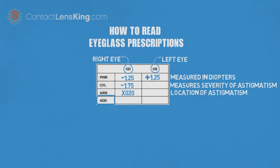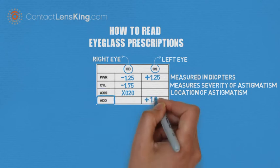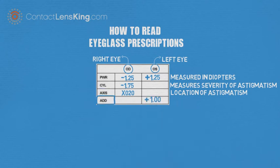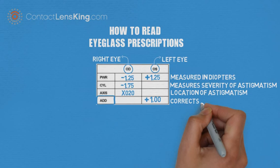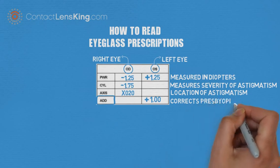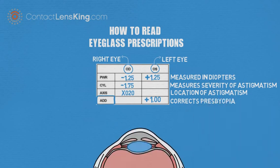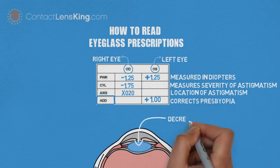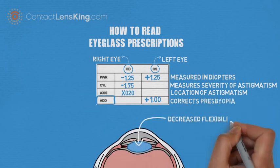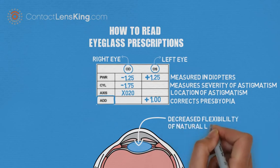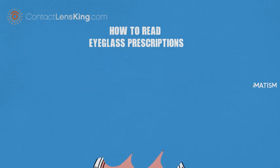Add. This attribute is used to specify the correction needed to offset vision difficulties caused by presbyopia, a condition caused by the decreased flexibility of the eye's natural lens.